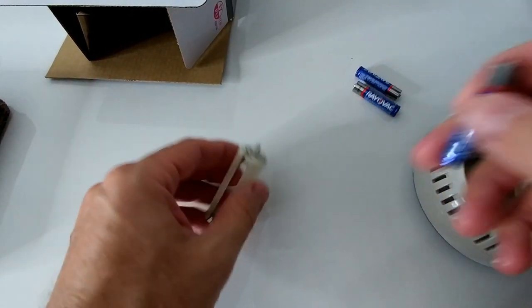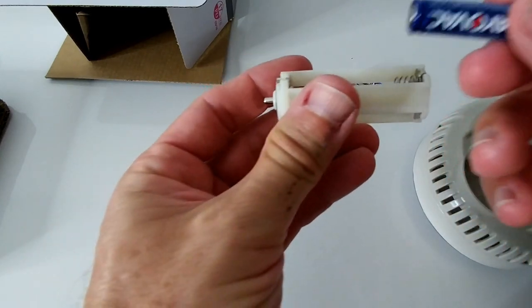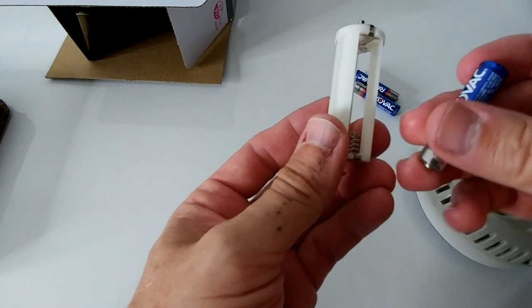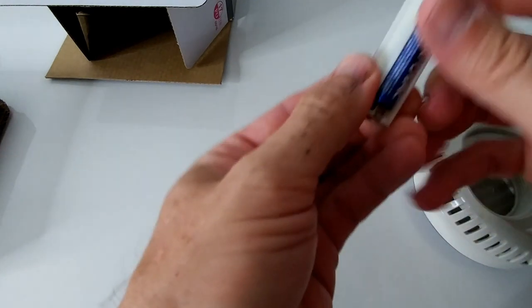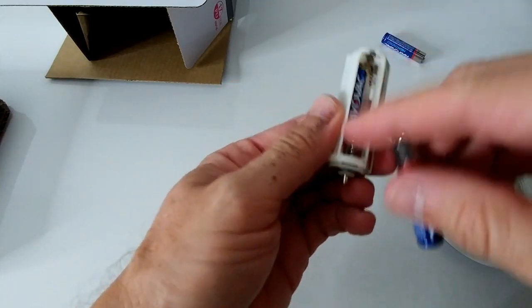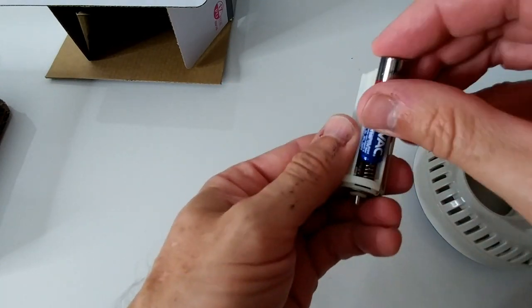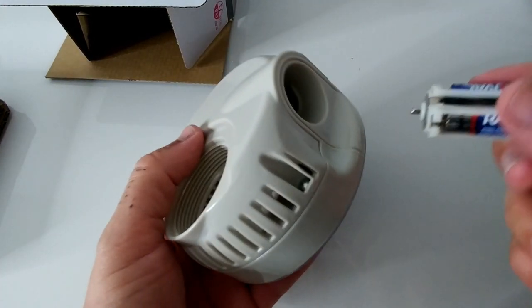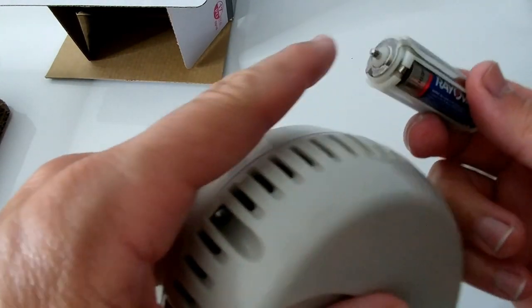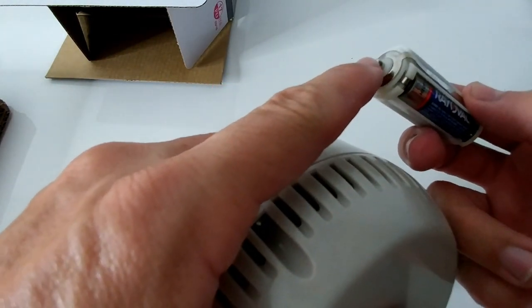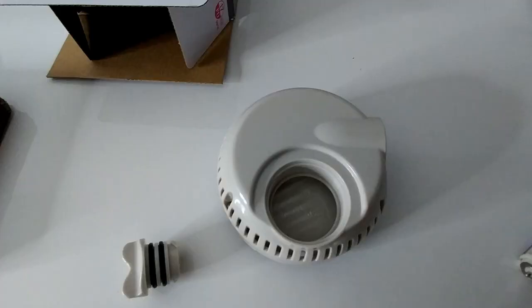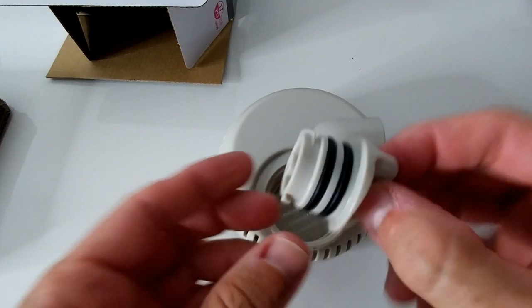I've been checking the instructions and I think the spring should be minus. So minus at the spring, and I have to put the batteries in with the tip in front, tip towards the light. Yeah, that makes more sense.